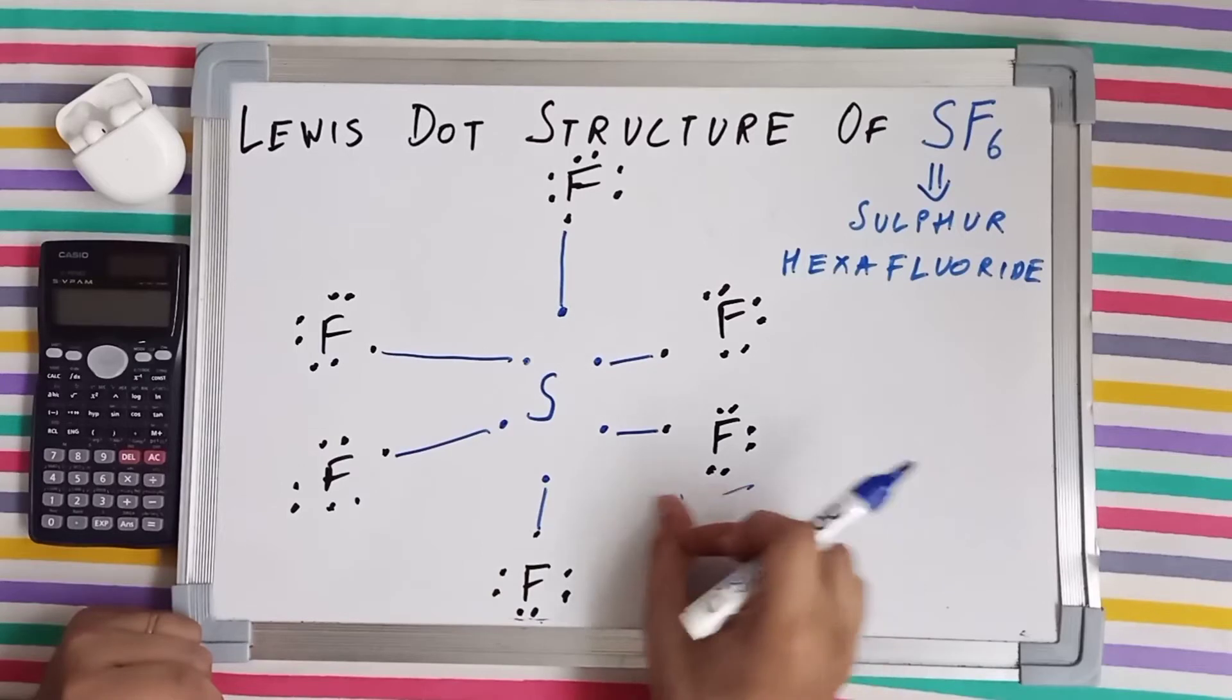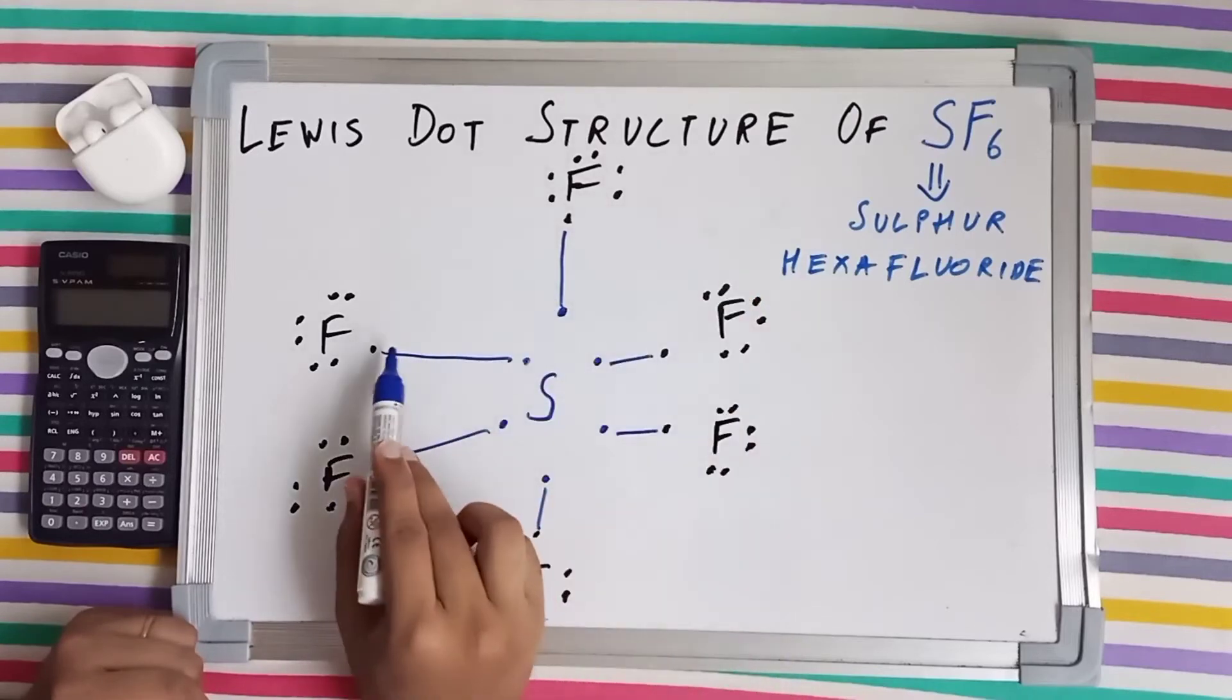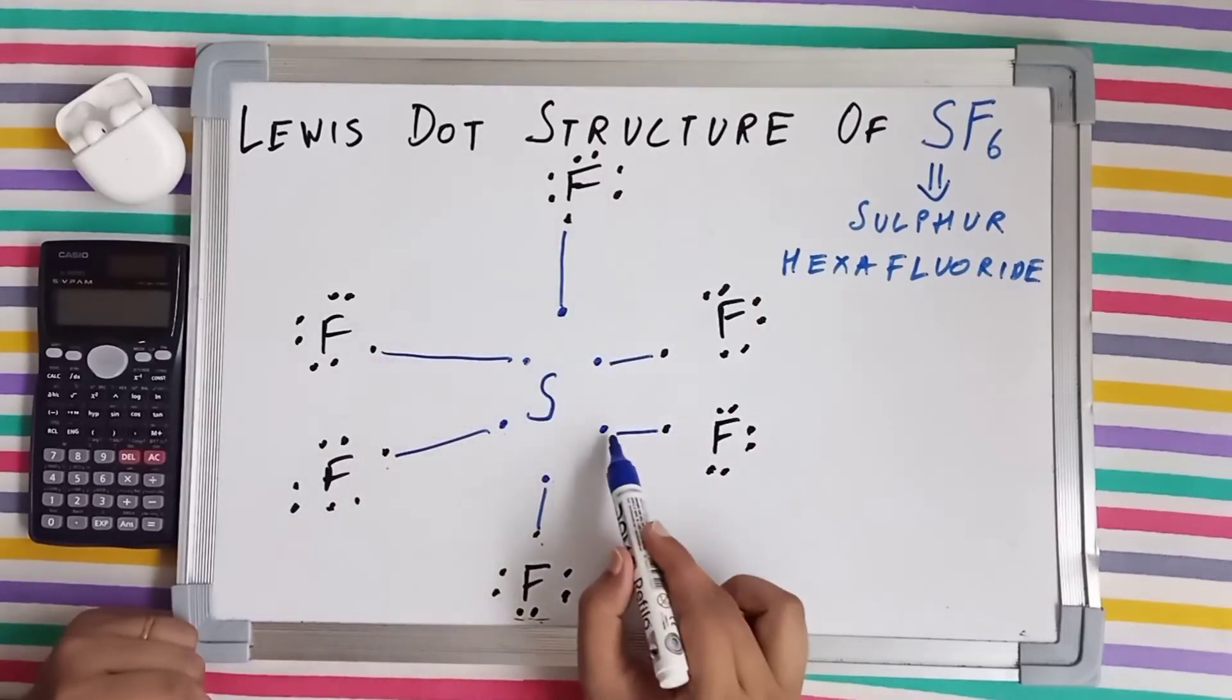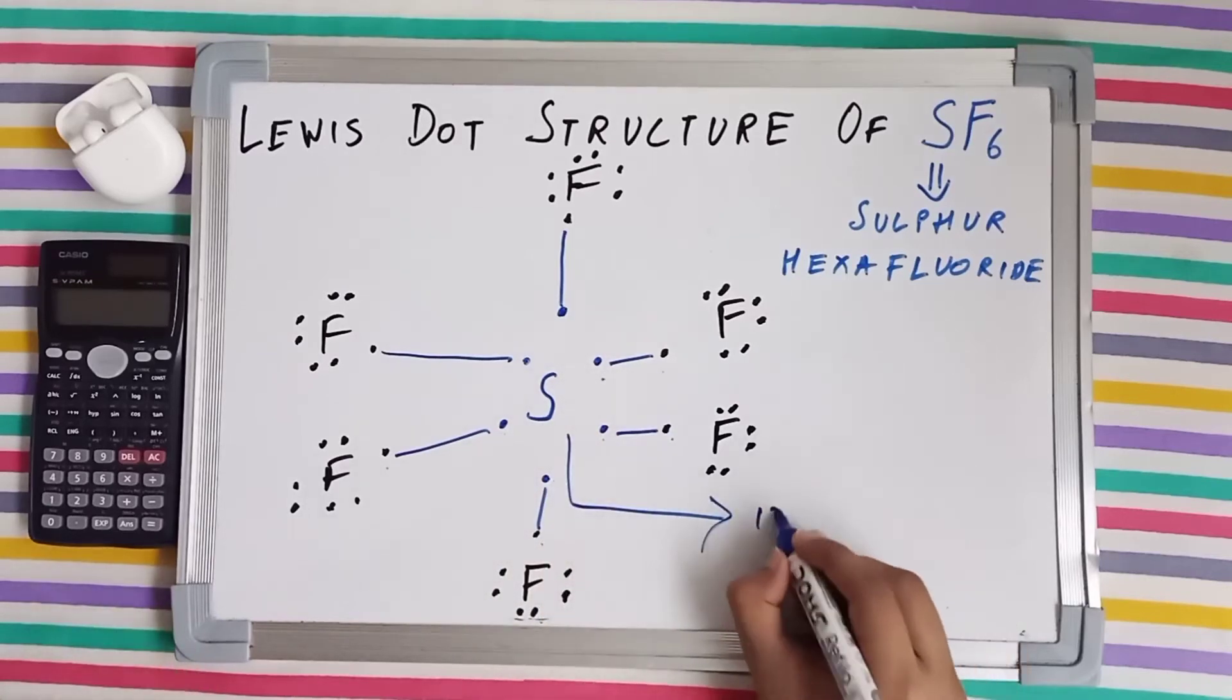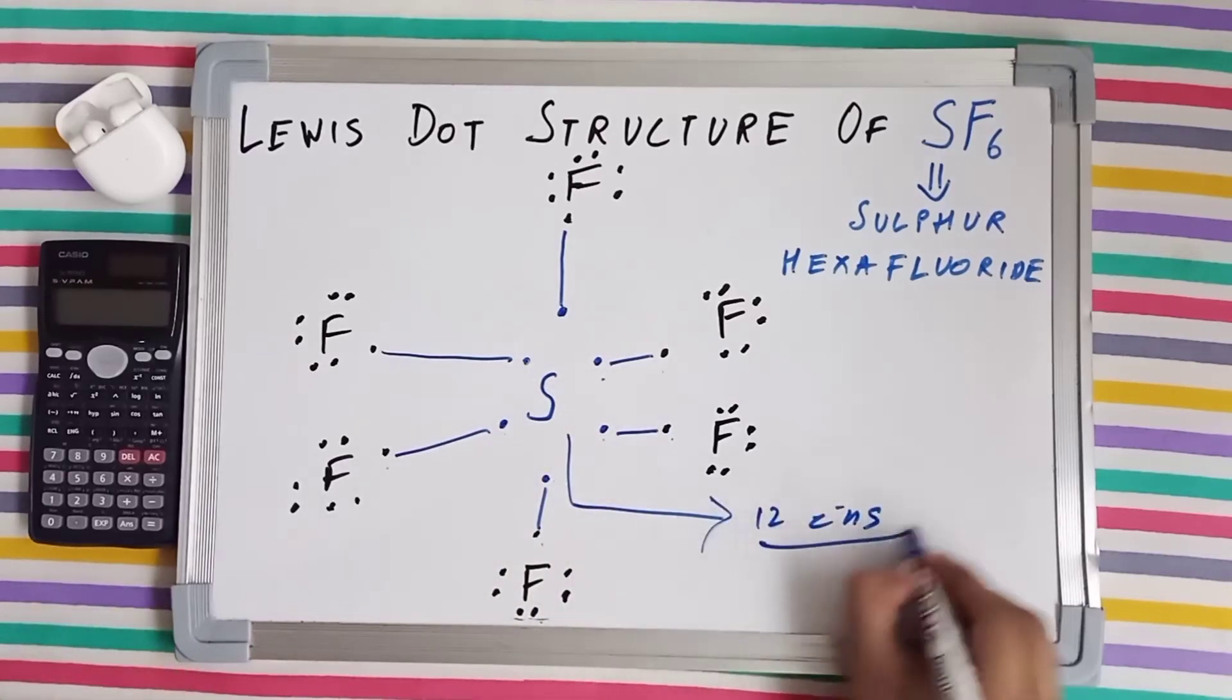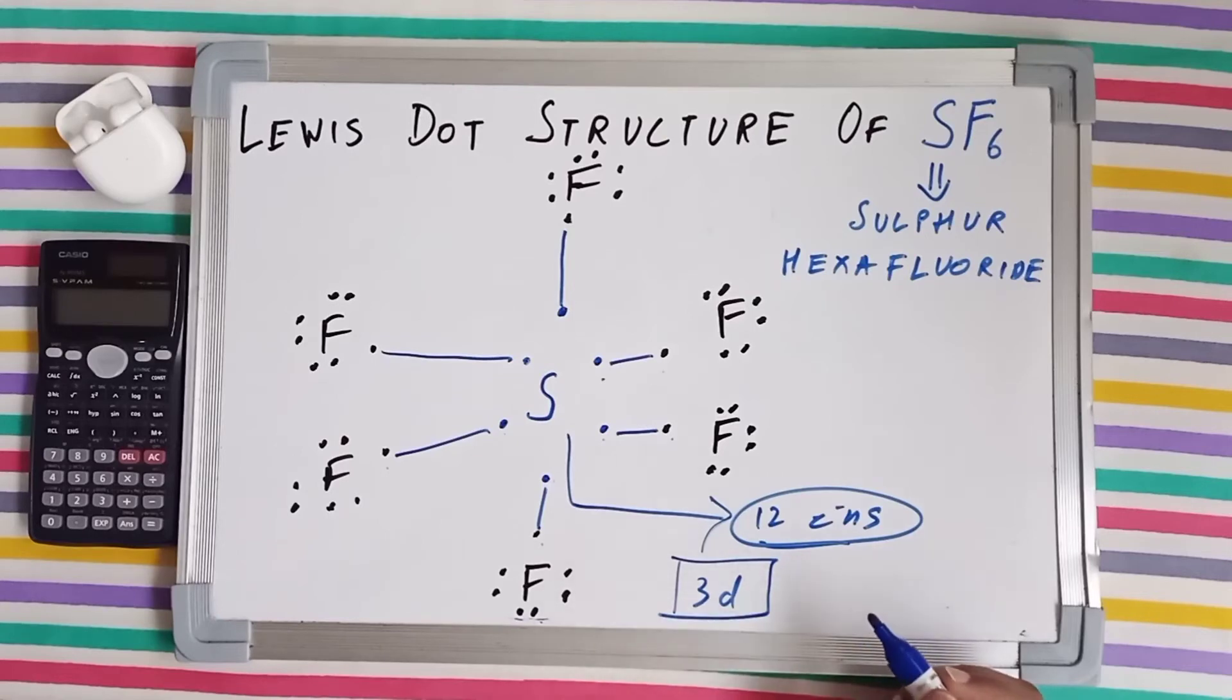But notice the number of valence electrons after bond formation of sulfur. It has 12 electrons. Why is it so? Because bond formation also took place in the 3d subshell.